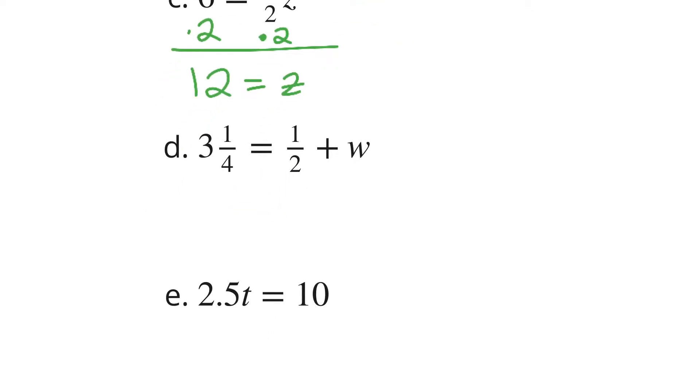Next, 3 and a fourth equals half plus W. I need to move that 1 half to the other side. If I subtract 2 fourths, that's the same thing as 1 half. If I subtract 2 fourths from both sides, borrow here, that's 2, add 4 to that, that's 5 fourths. 2 and 5 fourths is the same thing as 3 and 1 fourth. 5 fourths minus 2 fourths is 3 fourths, and we have 2 and 3 fourths equals W.